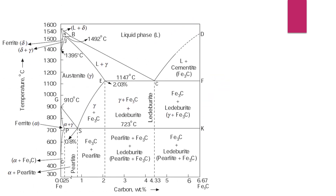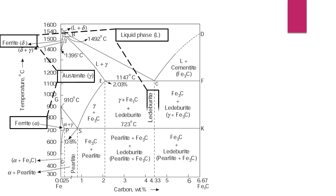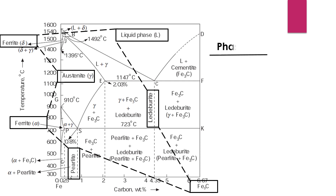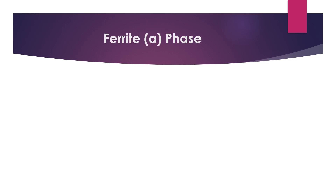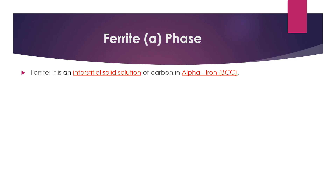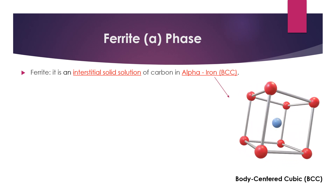Before explaining the complex cooling study of this phase diagram, let's throw a spotlight on the phases present in the iron-cementite phase diagram. One of the most important phases is the ferrite phase, which is also known as alpha iron. This ferrite phase is an interstitial solid solution of carbon in alpha iron that has a body-centered cubic crystal structure.